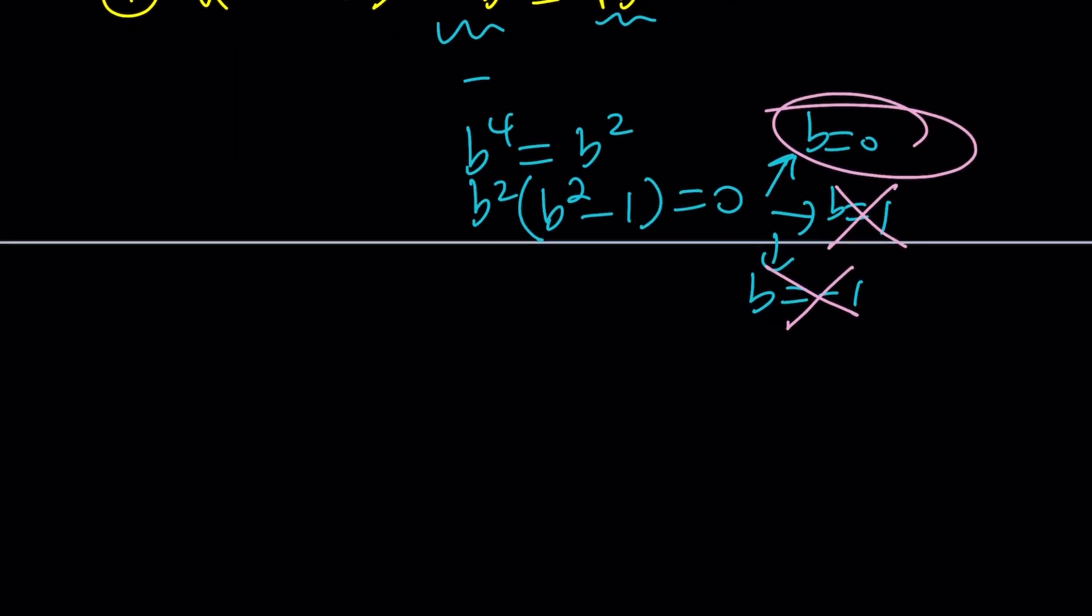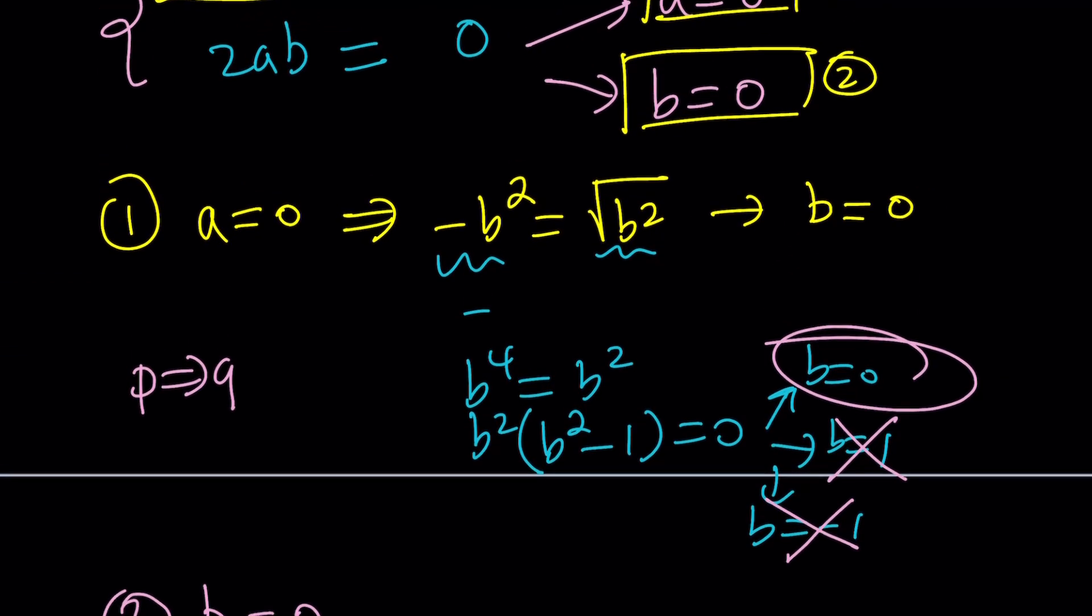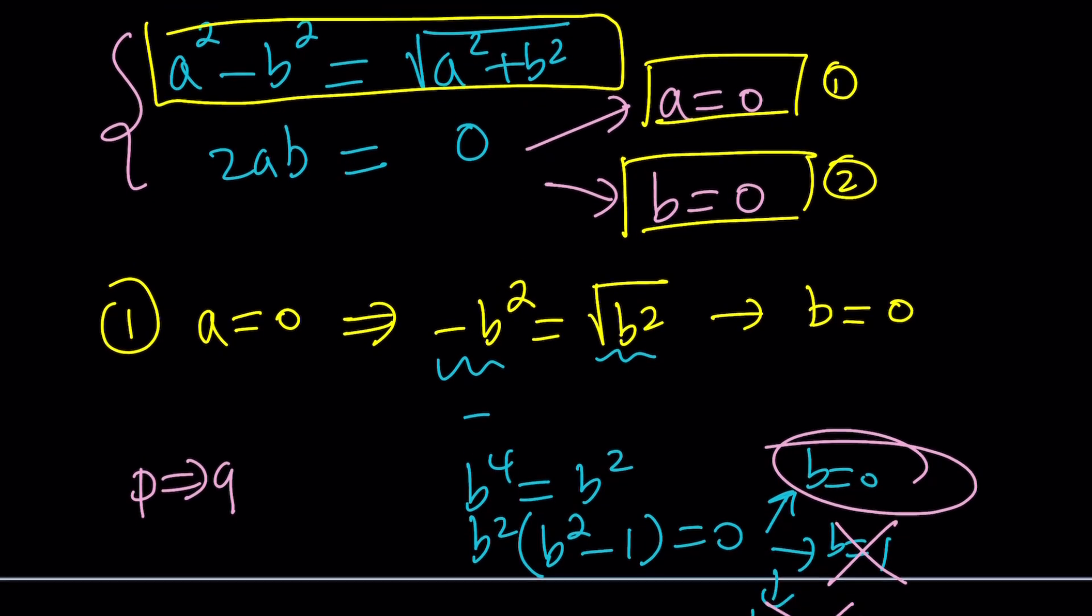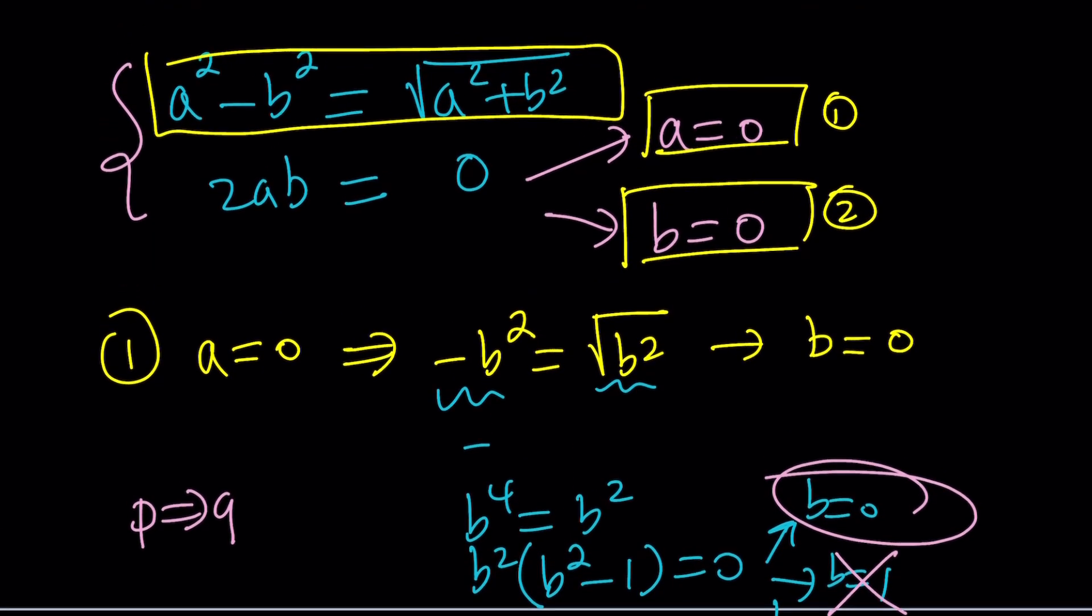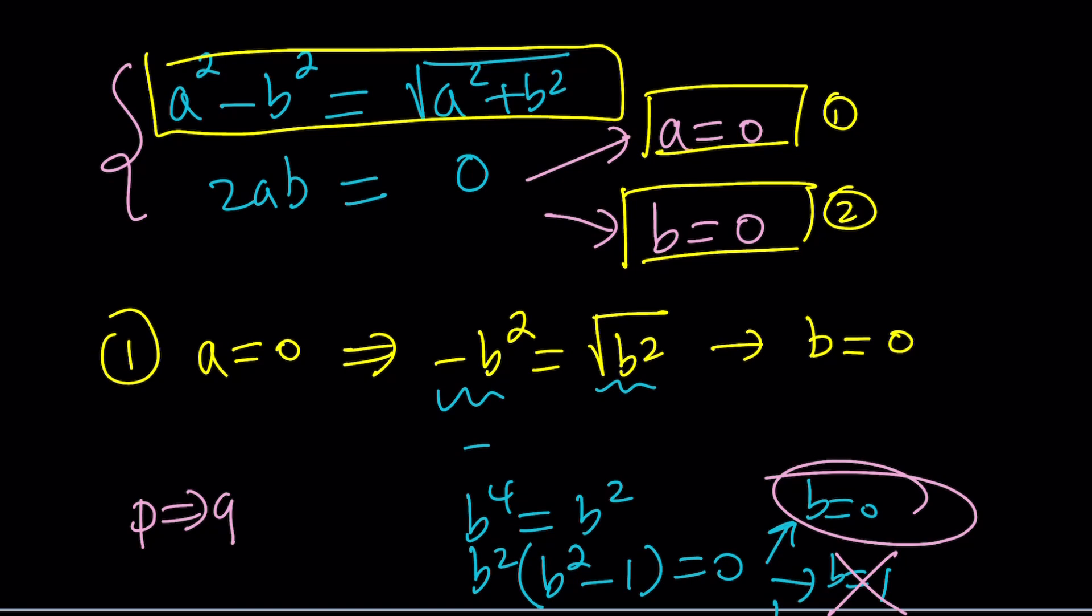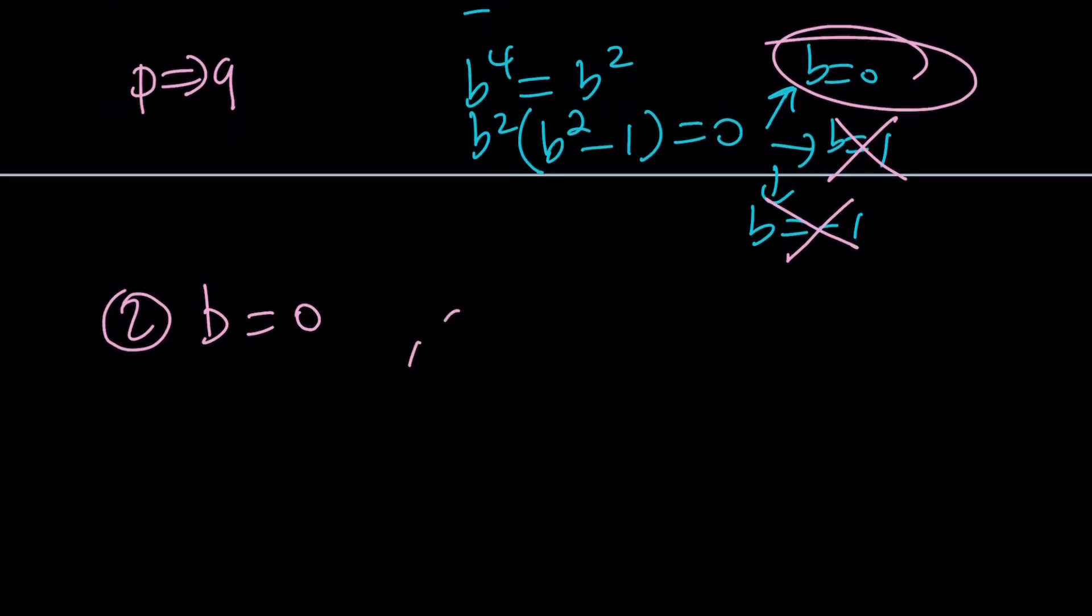Let's take a look at b equals zero. Does that mean b equals zero only implies a equals zero? Not necessarily because if P implies Q, that doesn't necessarily mean Q implies P. A little bit of logic there. So if b is equal to zero, I'm going to go ahead and plug it into the first equation. What's the first equation? A squared minus b squared equals the square root of a squared plus b squared, which is the absolute value.